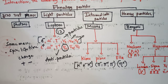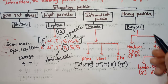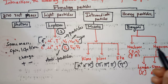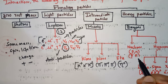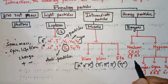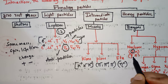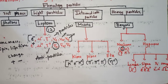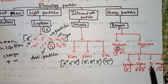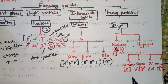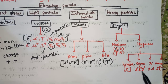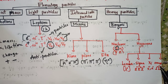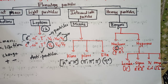Heavy particles are called baryons. Baryons are classified into nucleons and hyperons. Nucleons are further classified into protons and neutrons. The antiparticle of the proton is the antiproton, and the antiparticle of the neutron is the antineutron. Hyperons are of four types: lambda, sigma, xi, and omega. Lambda has only one: λ0. Sigma has three types: Σ−, Σ0, Σ+. Xi has two types: Ξ−, Ξ0. Omega has one: Ω−.